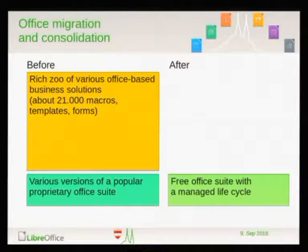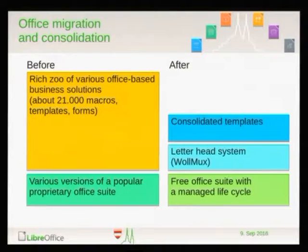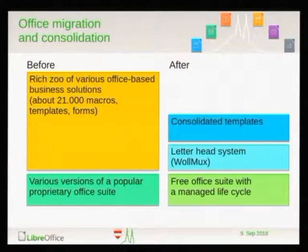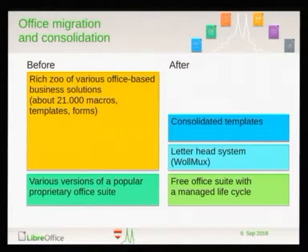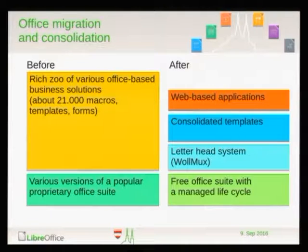At the foundation, a free office suite with a managed lifecycle was established, starting with OpenOffice.org and now in the process of switching completely to LibreOffice. Built on that was a dedicated office extension — our letterhead system, the Vollmox. It is a system on its own, worth a separate talk perhaps next year. It enables you to manage all those typical template-related tasks in a public administration and allowed us to really consolidate all those templates flying around. Some pre-existing office solutions turned out to be unsuitable for office and were migrated to proper web-based data applications.